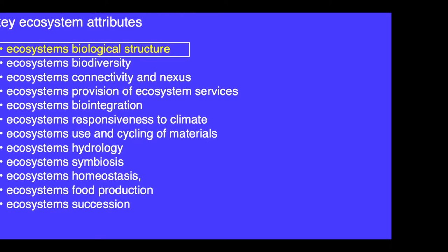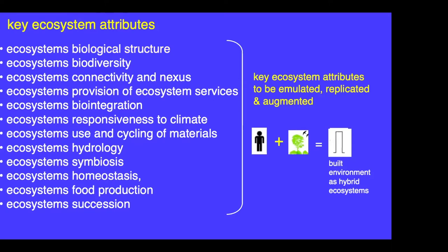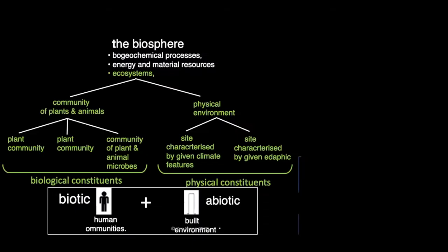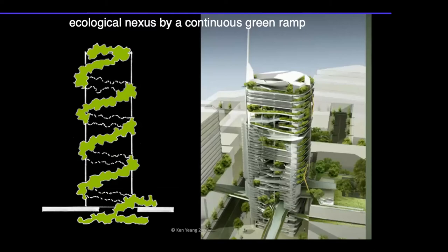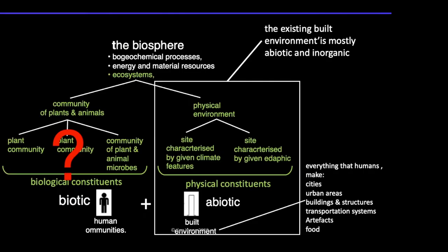Let me start with the first attribute: biological structure. The ecosystem consists of biotic and abiotic constituents. The key idea is that if we integrate human society with nature, the built environment that results is a hybrid ecosystem. The idea is to make cities, buildings, and structures into constructed ecosystems. So let's look at patterns of introducing biotic constituents into the built environment.